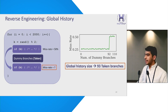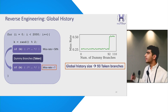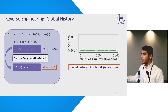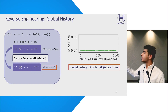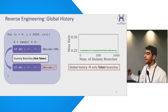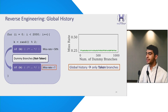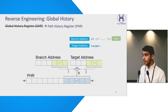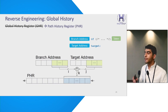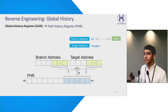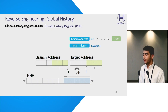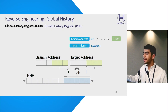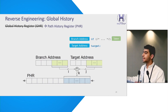The results show that the global history can only store information from the last 93 taken branches. When not-taken dummy branches are inserted instead of taken dummy branches, the results are surprising — regardless of the correlation distance, the predictor still accurately predicts the second branch. This indicates that the global history is only updated based on taken branches. We also discovered that Intel's branch predictors use a path history register, or PHR, rather than a global history register (GHR). The PHR obtains information from branch address and target address, combines them for a taken branch, and inserts the resulting information into itself.